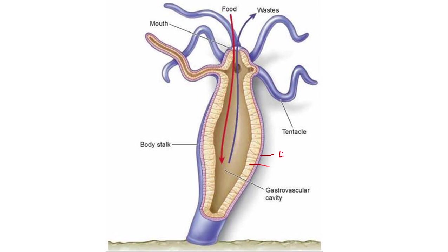After these two layers — the epidermis and the gastrodermis — there is a cavity present called the gastrovascular cavity. This is the simple body cavity of hydra, and it functions as the digestive cavity, meaning digestion of food in hydra takes place here.